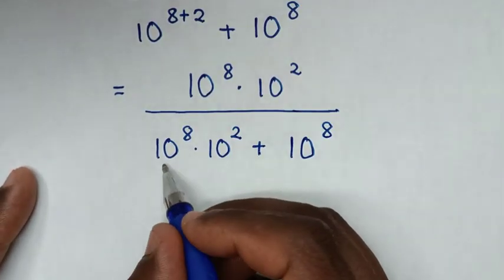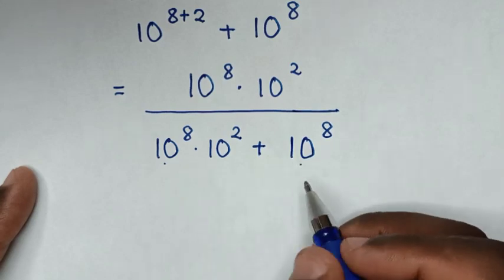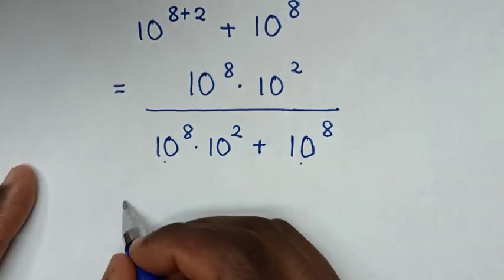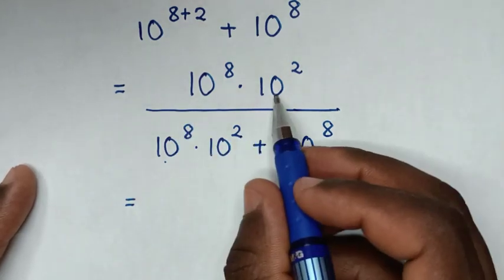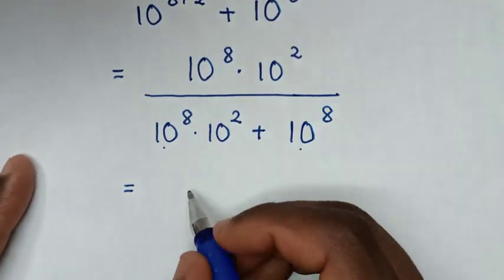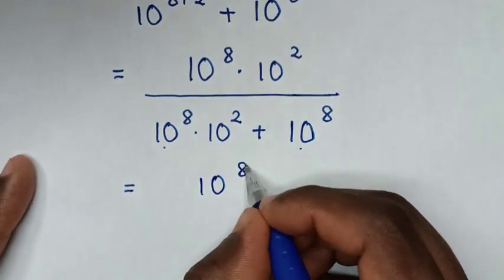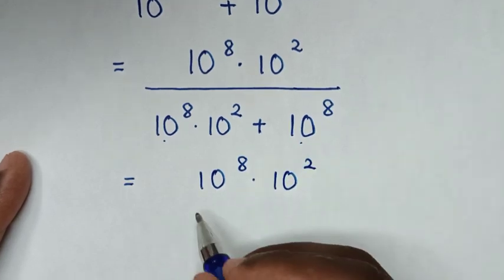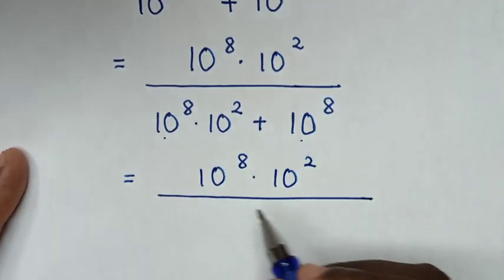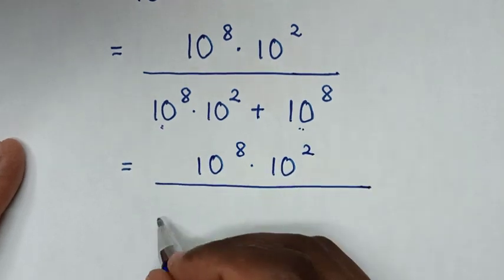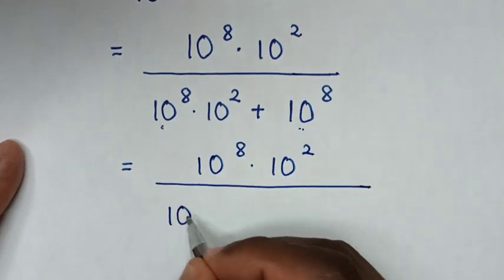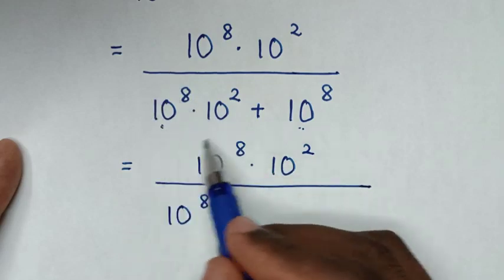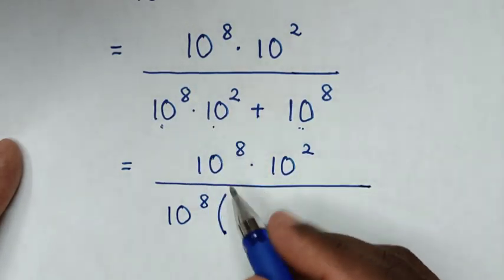From here, the denominator 10 power 8 is common. So we'll take 10 power 8 out of the bracket. In the numerator it is 10 power 8 times 10 power 2. In the denominator, we take 10 power 8 out of the bracket, then this divided by this gives 10 power 2 plus 1.